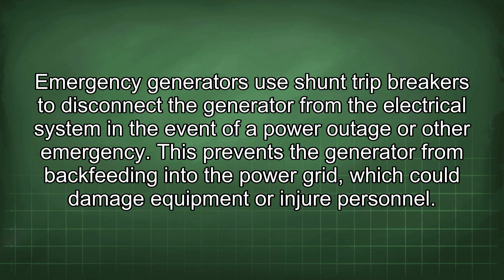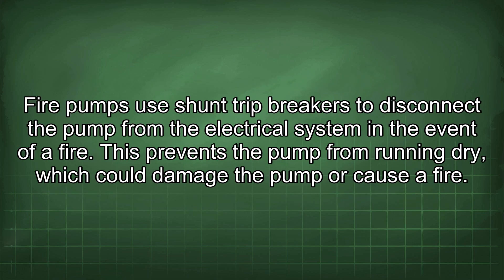This prevents the generator from backfeeding into the power grid, which could damage equipment or injure personnel. Fire pumps use shunt trip breakers to disconnect the pump from the electrical system in the event of a fire.